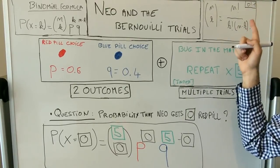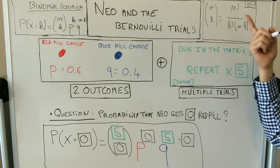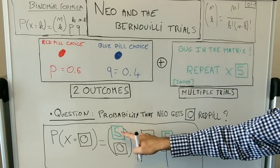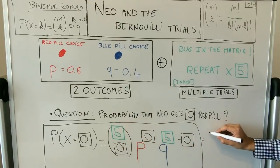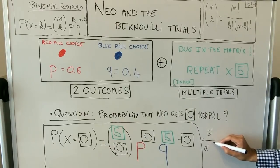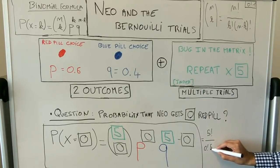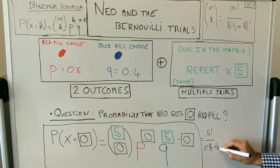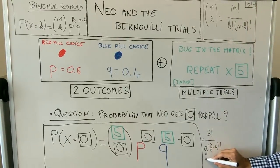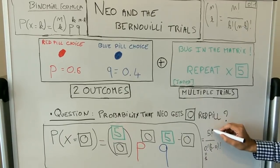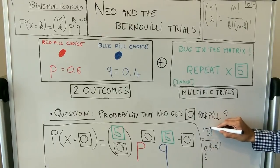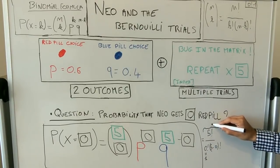So five choose zero is five factorial over zero factorial times (five minus zero) factorial. Zero factorial is one, and five factorial over five factorial is also one, so this whole term equals one.